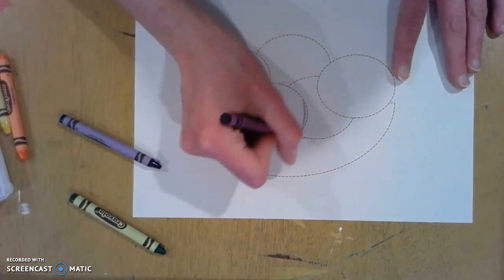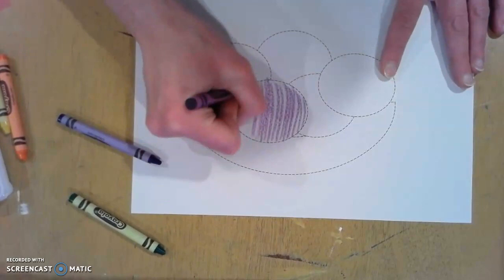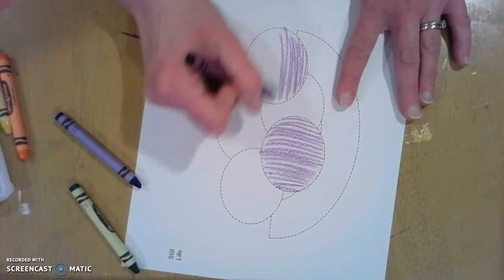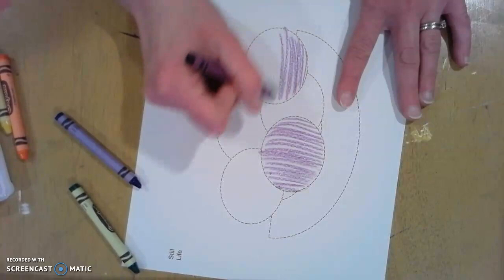Basically, just fill each of the shapes with lines in one of the three directions. You can turn the page if you need to. You can limit colors if you need to. You can pull out that ruler.